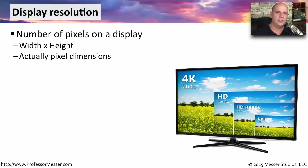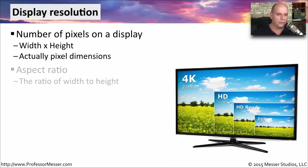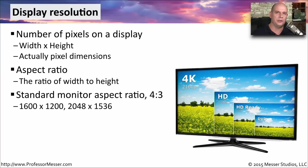Another important characteristic of a display is the resolution. This describes how many pixels are available to view on that particular display. We describe this as the number of pixels along the width times the number of pixels along the height. This is also referred to as the aspect ratio, where we're looking at the difference between the width and the height of the display. Some traditional standard monitors were a 4 by 3 aspect ratio, with resolutions of 1600 by 1200 or 2048 by 1536, but the aspect ratio always stayed the same.